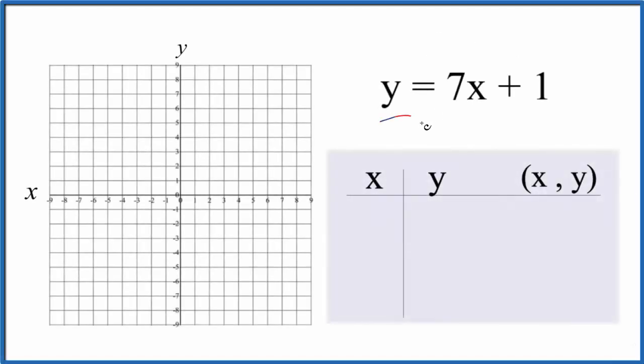Let's graph the linear equation y equals 7x plus 1, and we're going to do this two ways. First we'll use a table of values to figure out the graph for y equals 7x plus 1, then we'll check our work with slope-intercept formula.